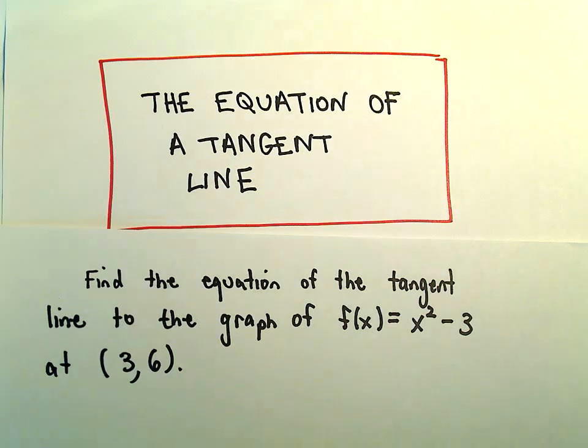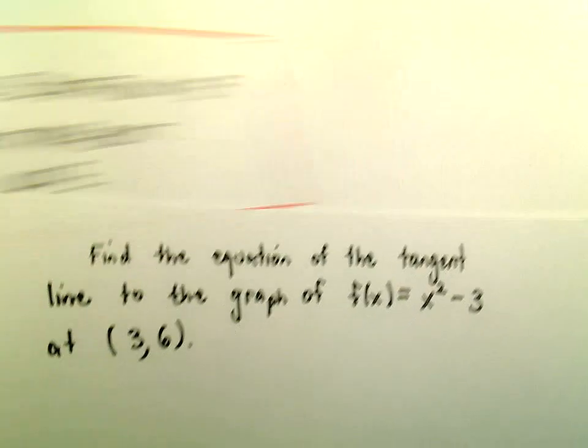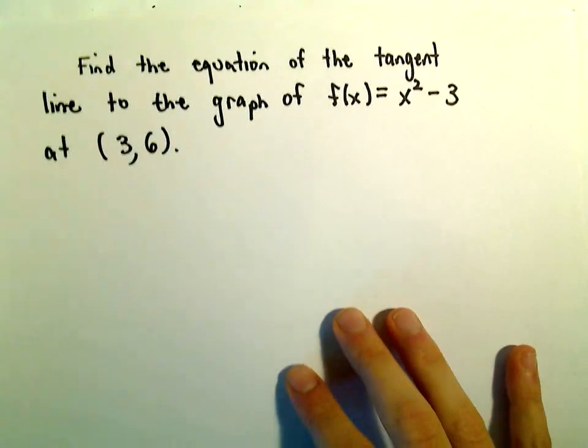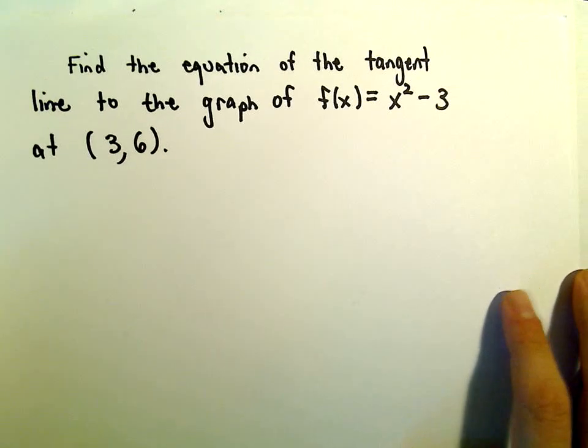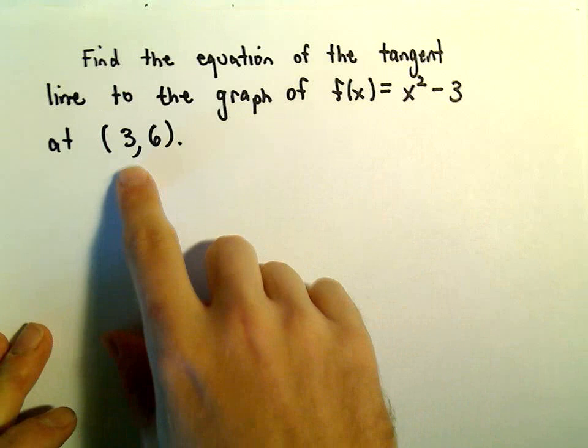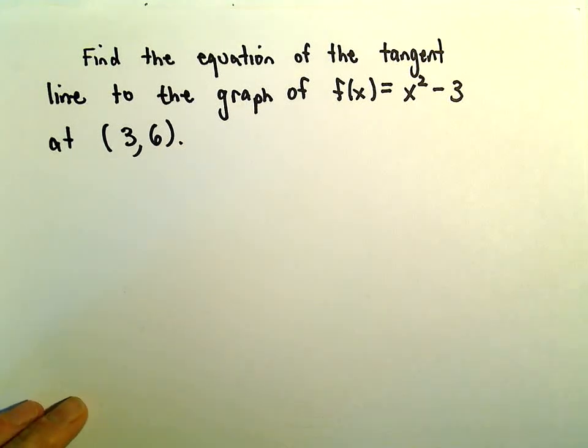In this video, we're going to look at an example of finding the equation of a tangent line. We're going to find the tangent line to the graph of f(x) = x² - 3 at the point (3, 6).